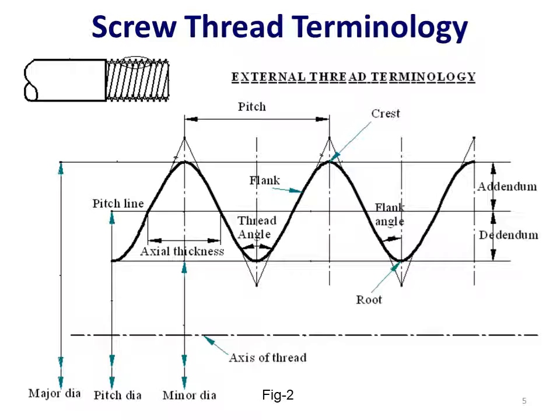The screw thread terminology includes: major diameter, pitch diameter, minor diameter, axis of thread, pitch line, thread angle, axial thickness, flank, pitch, crest, flank angle, addendum, dedendum, and root. There are some other terminologies as well, but these are the basic terminologies we are going to learn today.